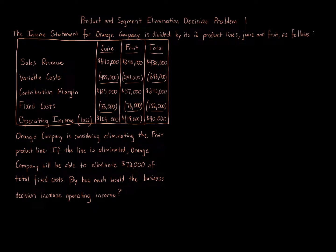Product and segment elimination decision, problem one. The income statement for Orange Company is divided by its two product lines, juice and fruit. Sales revenue: juice $640,000, fruit $298,000, total $938,000. Variable costs: juice $455,000, fruit $241,000, total $696,000. Contribution margin: juice $185,000, fruit $57,000, total $242,000. Fixed costs: juice $76,000, fruit $76,000, total $152,000.